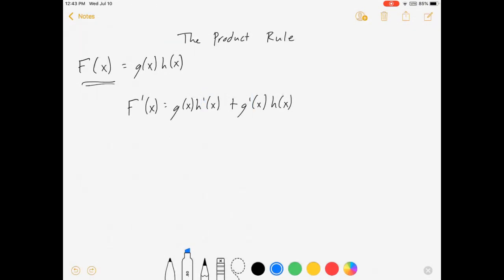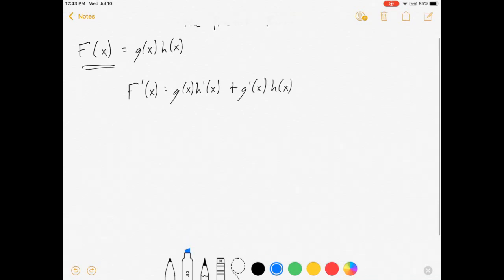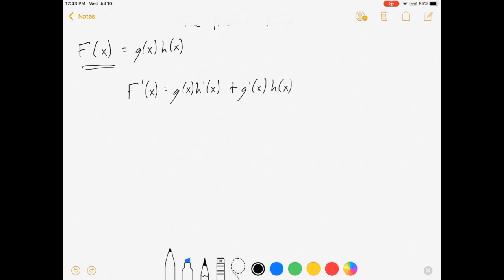Now why does this matter for my econ class? Well let's do an example here real quick. Let's say we have a revenue function. Revenue is a function of q. And revenue is equal to p times q. Okay, price times quantity, that's how much money comes into my store.